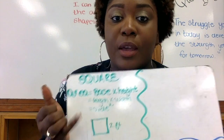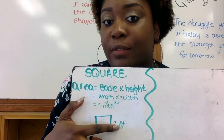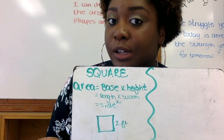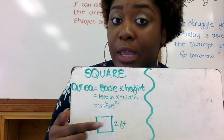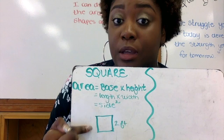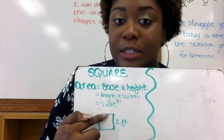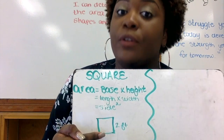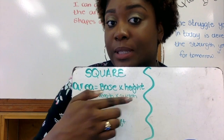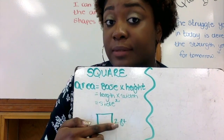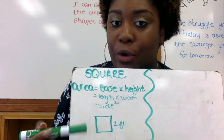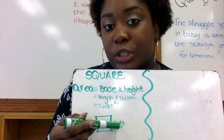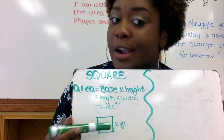For our first example, we have a square with two feet on one side. Since all sides of a square are the same, each side is two feet. To find the area, we plug in base times height: two times two gives us an area of four feet squared.